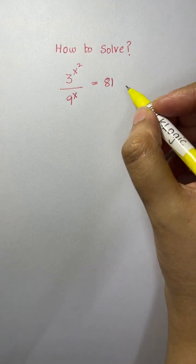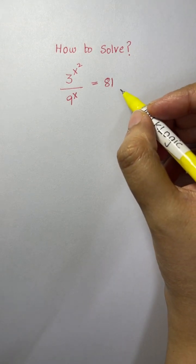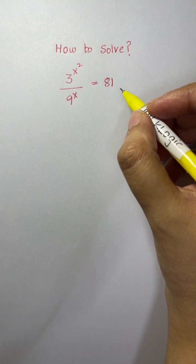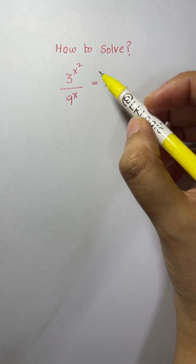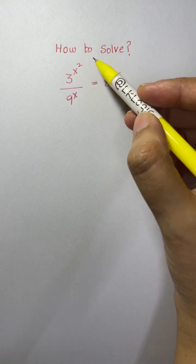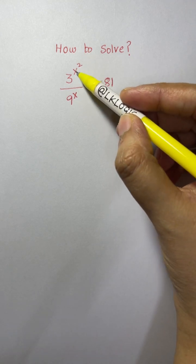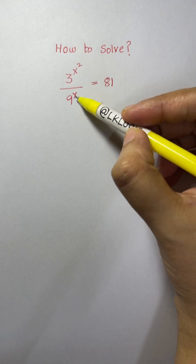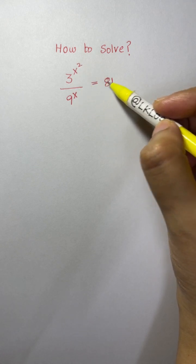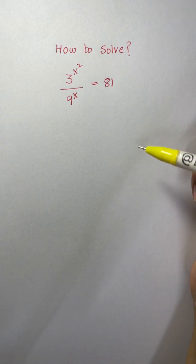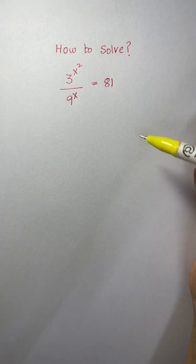Hi guys, here we are with another nice exponential equation to solve, which is how to solve 3 to the power of x squared over 9 to the power of x equals 81.